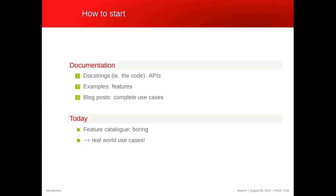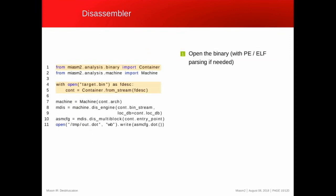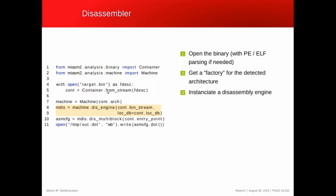Starting with the basics: MIASM has its own assembler-disassembler engine and can manipulate x86, ARM, MIPS, and other architectures. It supports ELF, Portable Executable, or raw native bytecode. You can also add custom architectures — someone here actually did that and will present it this afternoon. Everything starts from bytes, so we disassemble them. With a container, a disassembly engine, and a function call, you get an assembly control flow graph. This simple code is in fact a multi-architecture disassembler.